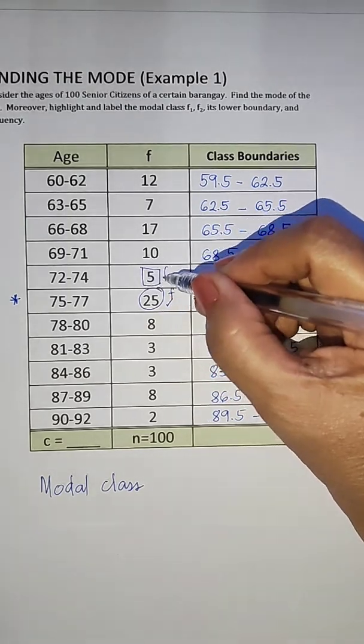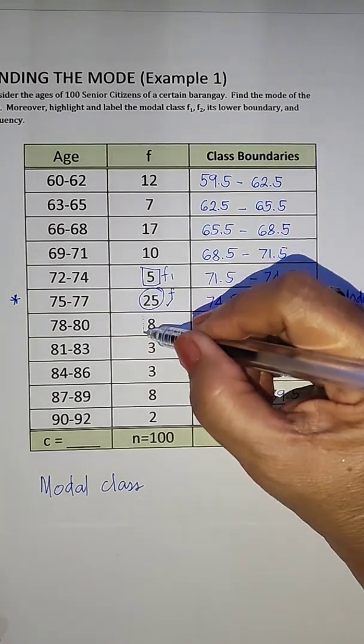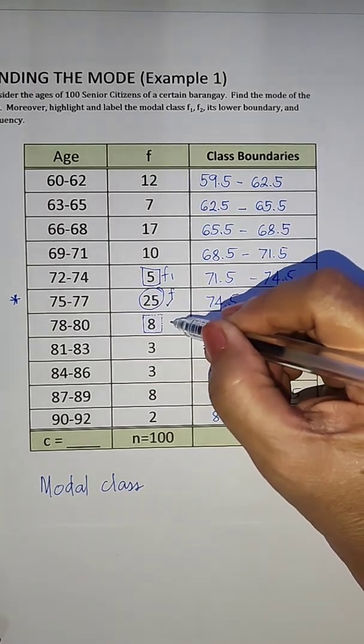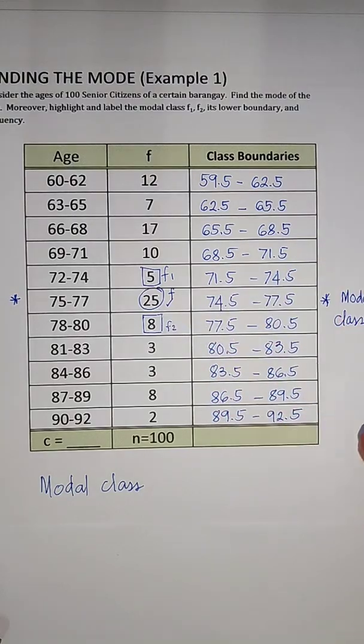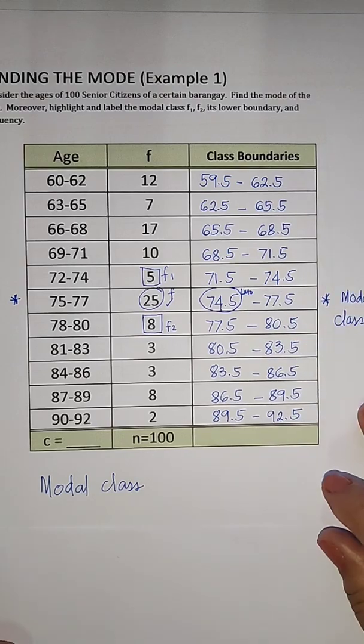And our F2 is this one, the frequency which is higher than the modal class. And then this is the lower boundary of our modal class.